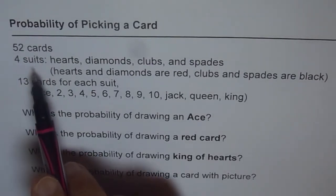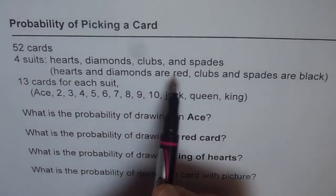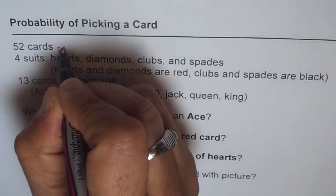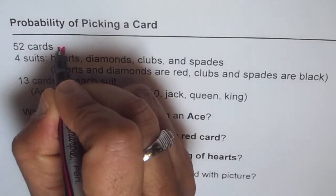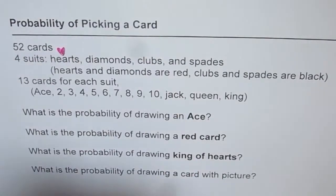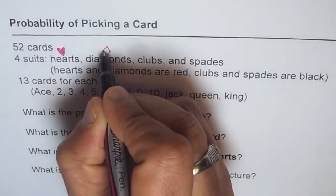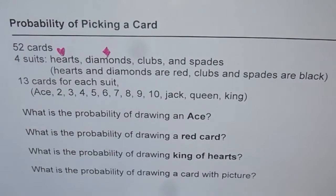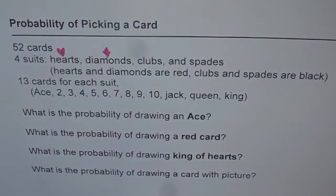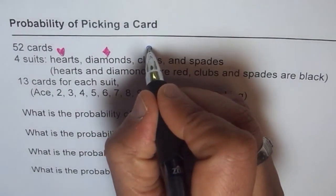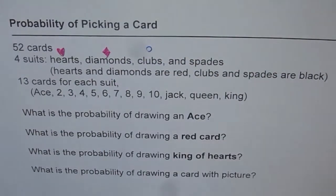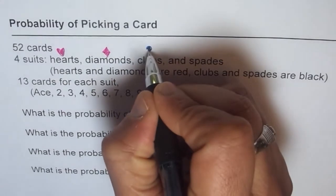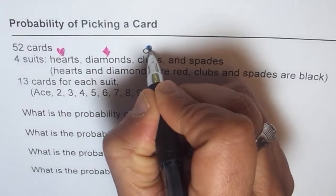We call them four suits: hearts, diamonds, clubs, and spades. Hearts have the shape of a heart and are red in color. Diamonds have a diamond shape and are also red. Clubs and spades are black in color.